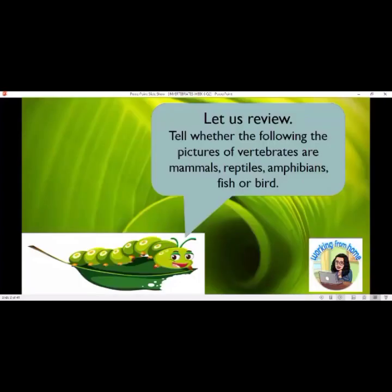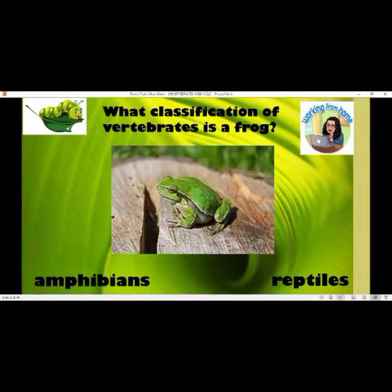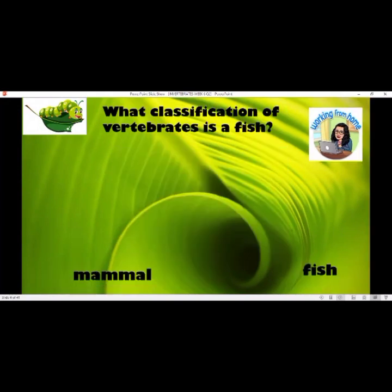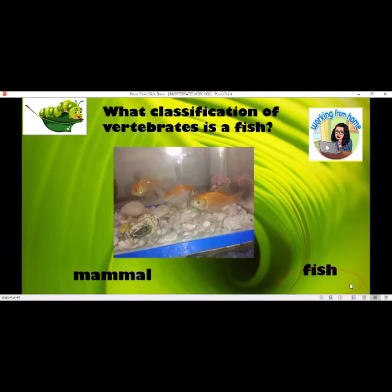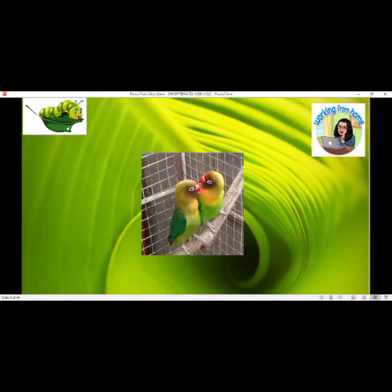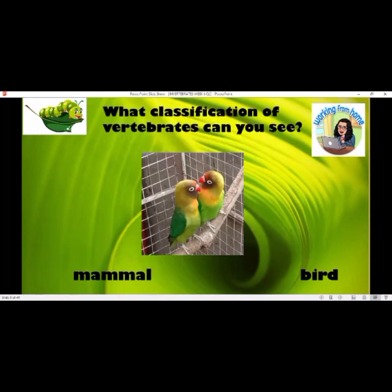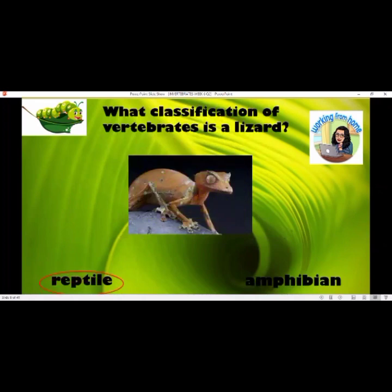Let us review. Tell whether the following pictures of vertebrates are mammals, reptiles, amphibians, fish, or birds. What classification of vertebrate is a frog? Of course, it is an amphibian. What classification of vertebrate is a fish? Of course, it's a fish. What classification of vertebrates can you see? Of course, it's a bird. What classification of vertebrate is a lizard? Of course, it is a reptile.